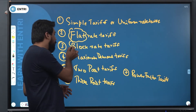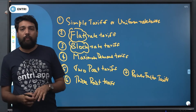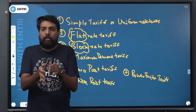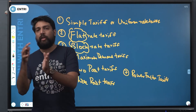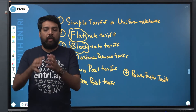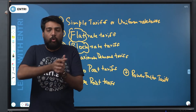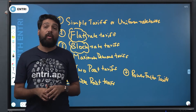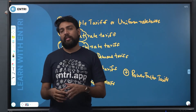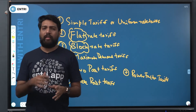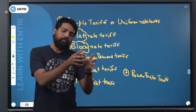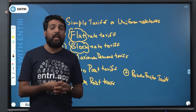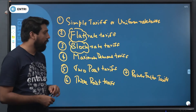The third is the block rate tariff. A fixed block of units — for example, up to 100 units — is charged at one rate, and beyond 100 units the next block rate applies. This is typically applied for residential consumers, with one block having one charge.